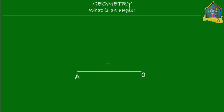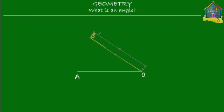Let's call this line OB. Now I'm going to show you what an angle is. I take this line OB and I rotate it — I turn it. And this is what I get: a line OB which is now away from line OA, but it still meets line OA at point O.